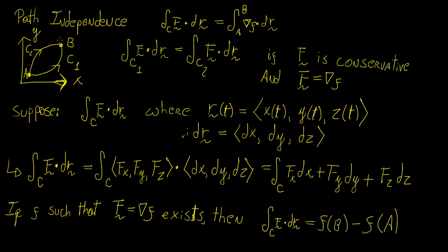That's a really important concept. So how does it actually work? We are claiming that the line integral taken over path c1 from a to b is exactly the same as the path taken on c2. This is only true if the vector field f is conservative, and there exists a function f such that its gradient is equal to the vector field f.